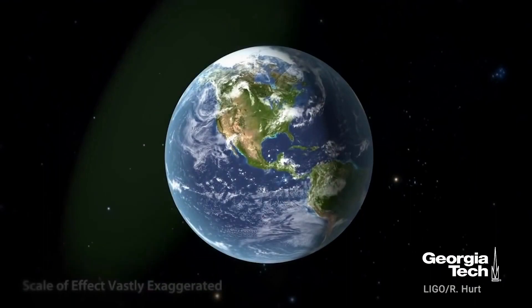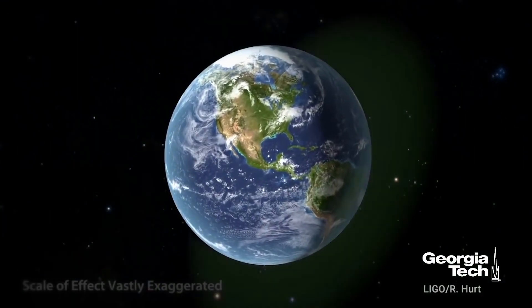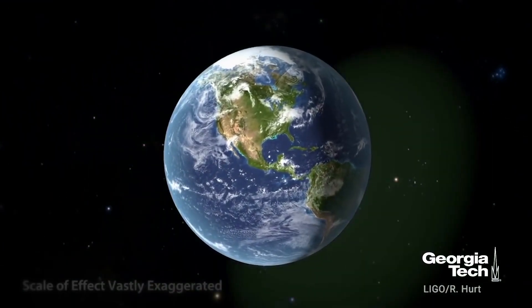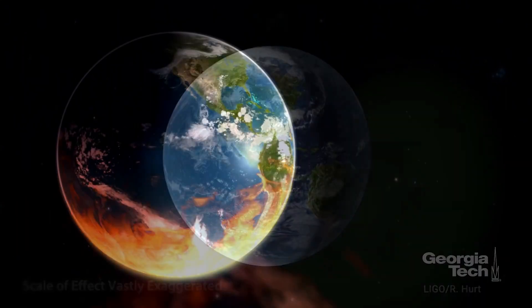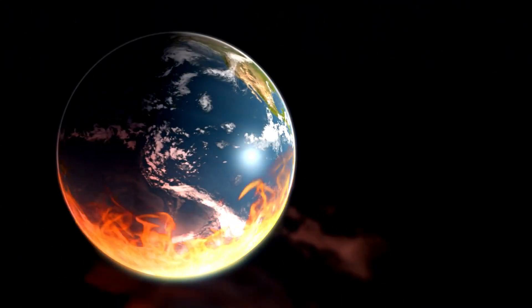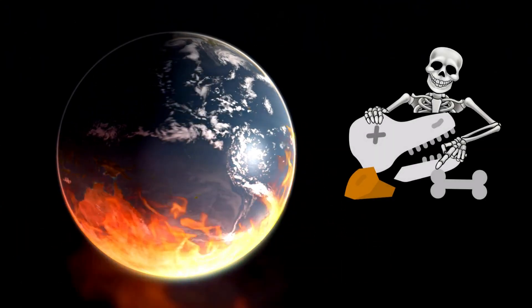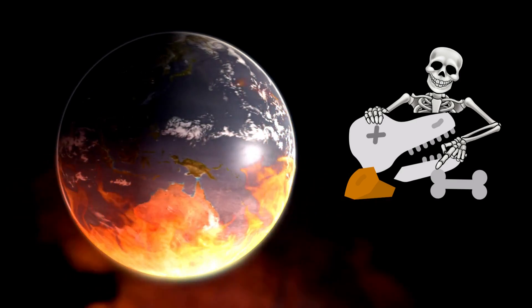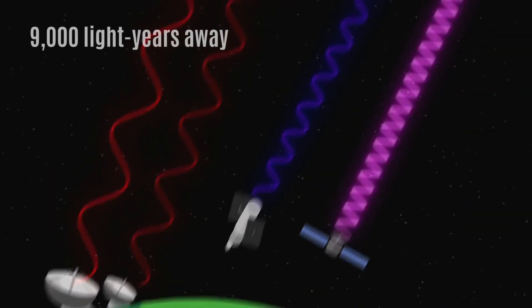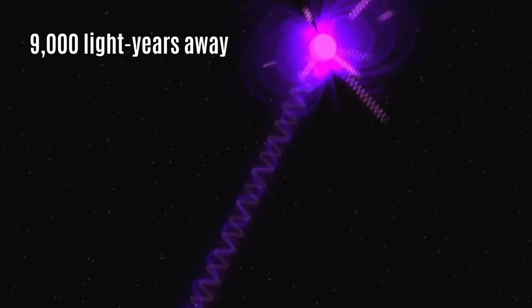A similar blast within 10 light-years of Earth would severely affect the atmosphere by destroying the ozone layer and causing mass extinction. However, the nearest known Magnetar to Earth is located 9,000 light-years away in the constellation Carina.